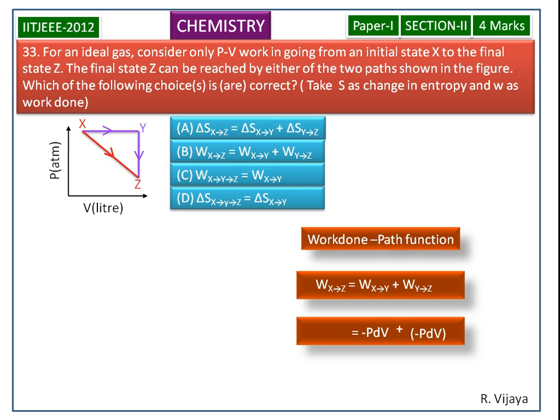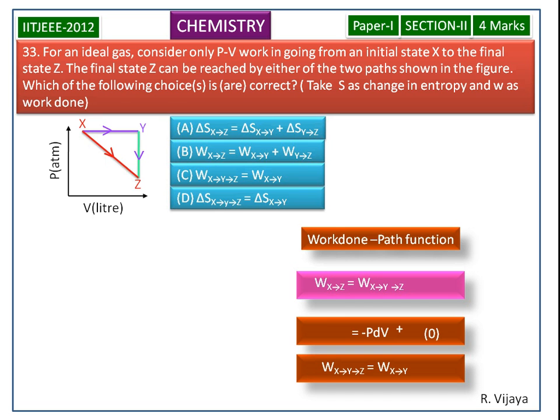Along Y, Z path the process is isochoric process. So, the change in volume will be 0. So, the work done value is also 0. The net work done will be work done in X, Y path. The left hand side work done in X, Z path can be written as work done in X to Y path and Z path. So, the result is work done in X to Y to Z path is equal to work done in X, Y path.